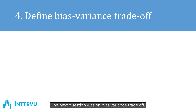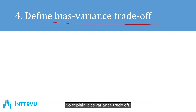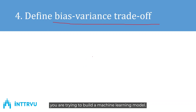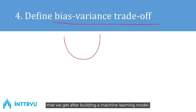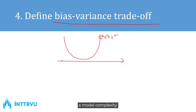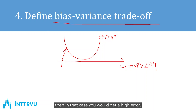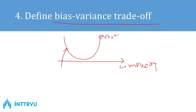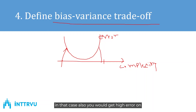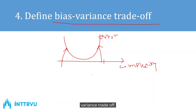The next question was on bias-variance tradeoff — explain bias-variance tradeoff. This tradeoff comes into picture when you are building a machine learning model. Looking at the error curve with model complexity on the x-axis: if a model is less complex, you get high error; if it is highly complex, you also get high error on the test data. This scenario is the bias-variance tradeoff.